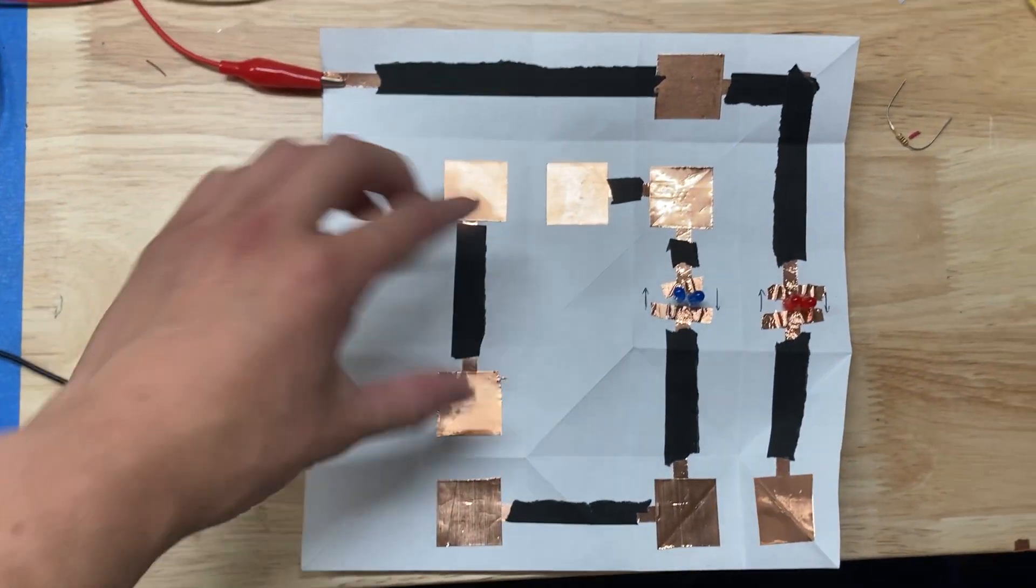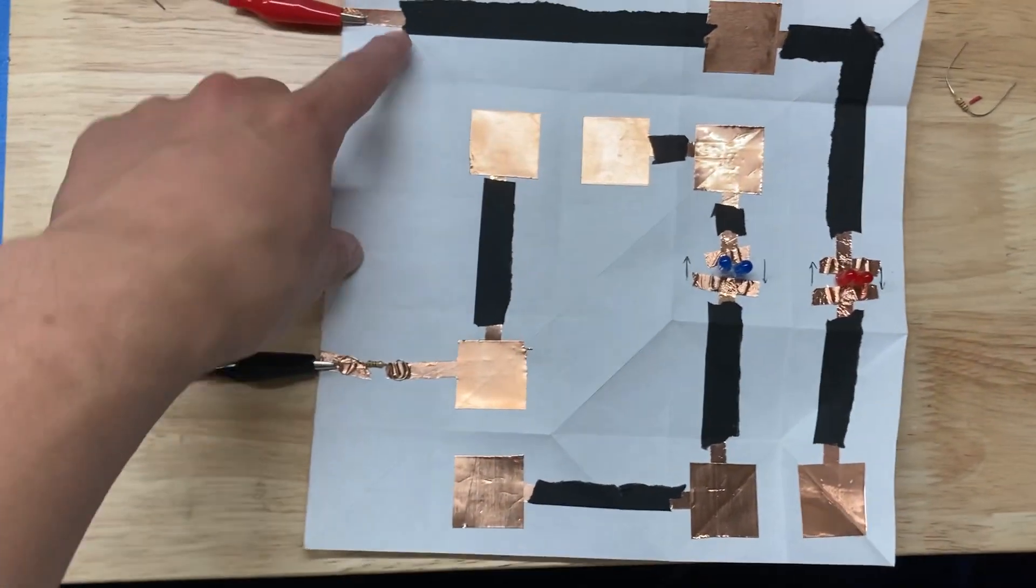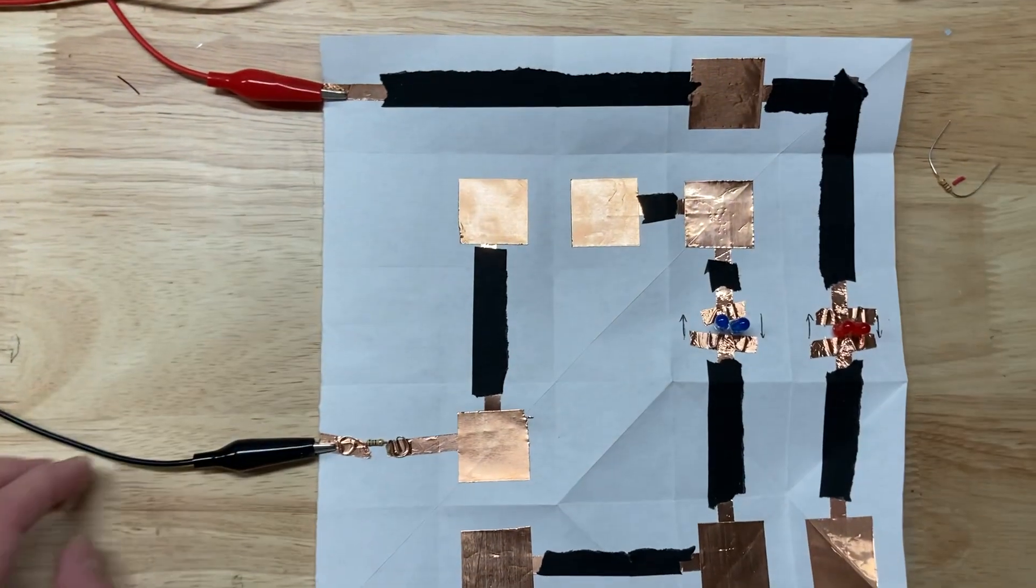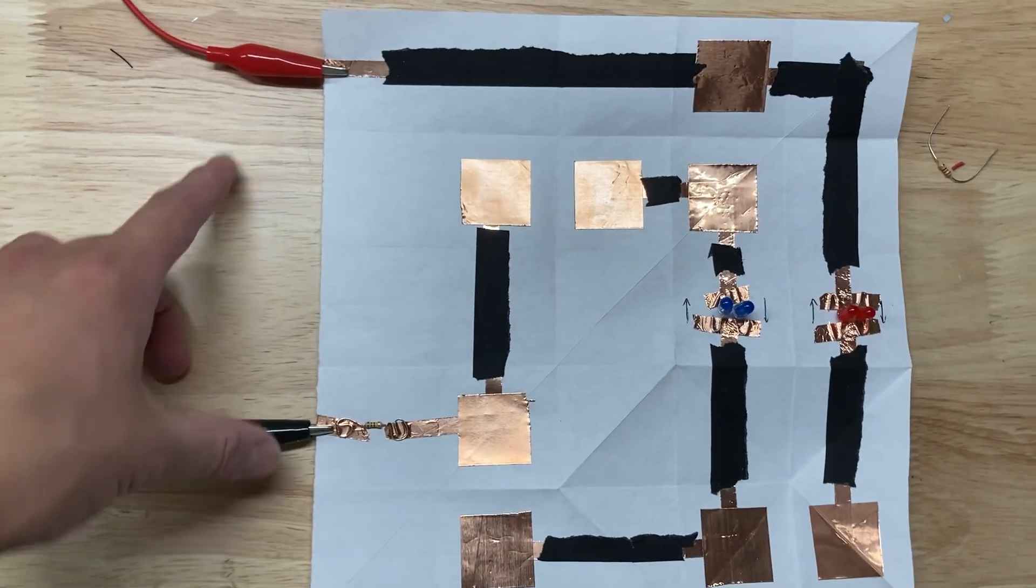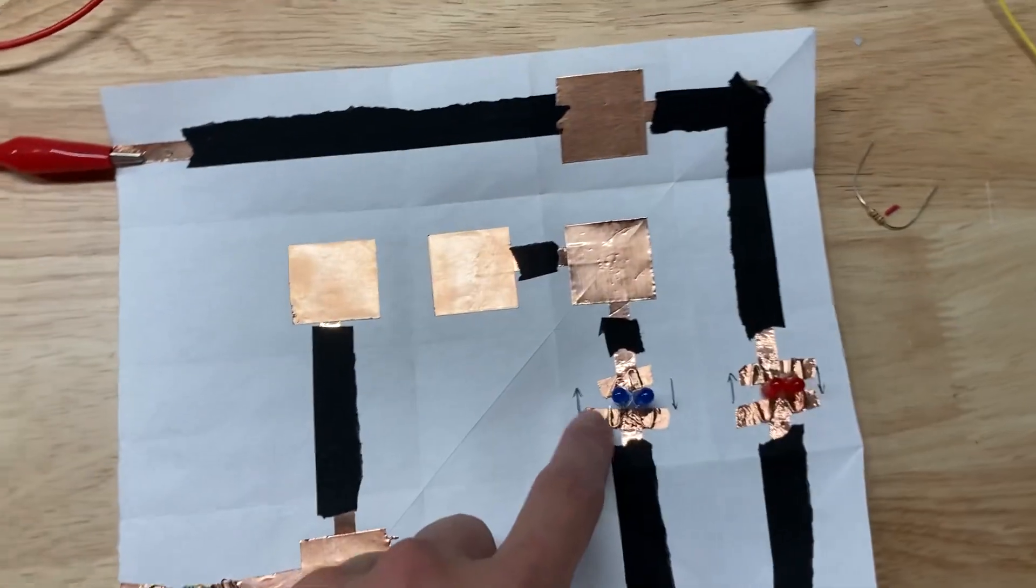Alright, so we have this circuit here. It's just a piece of paper with some copper tape on it. This black stuff is insulating tape, and then we got a power supply. It's doing 3 volts right now, and then a resistor to make sure not to burn out the LEDs.